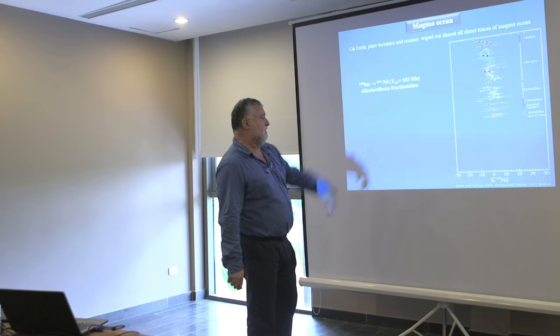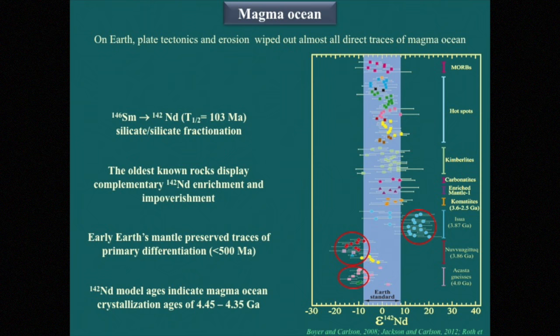Some researchers — Jackson and Carlson, and Boyer and Carlson — worked on the extinct radioactivity ¹⁴²Neodymium and showed that on the Earth, almost all rocks have the same isotopic composition, called the Earth Standard, except very old rocks from Isua at 3.87 billion years, Nuvvuagittuq at the same age, and Acasta at 4 billion years.